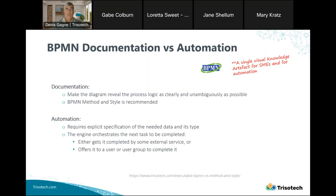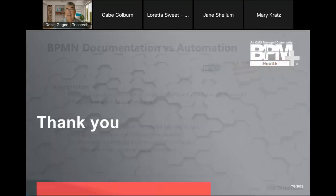The engine will orchestrate the next task to be completed. The engine basically moves the token for you and either gets the next activity completed by some service or offers it to a user or group of users to complete. There's a nice blog post at the URL at the bottom that discusses the difference between modeling for documentation and modeling for automation. And that's basically it for my introduction to BPMN in five minutes.